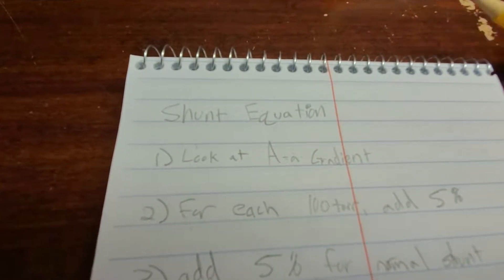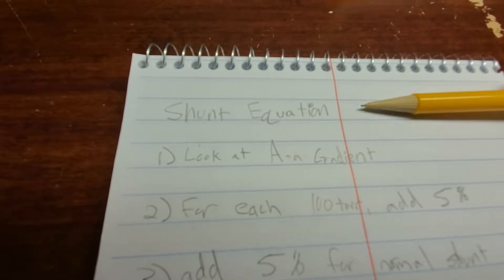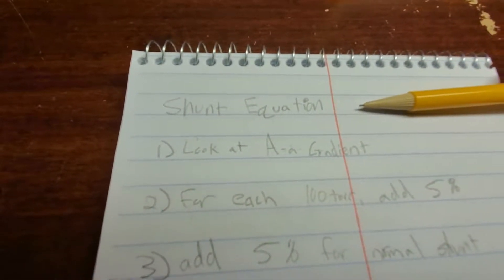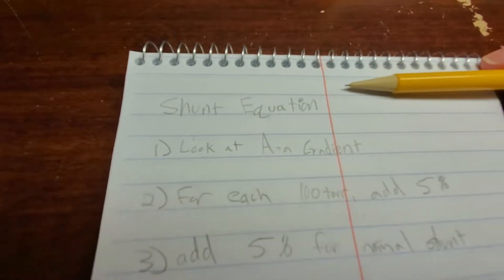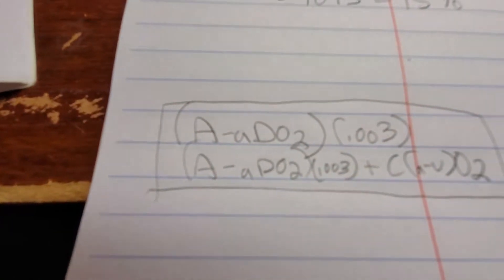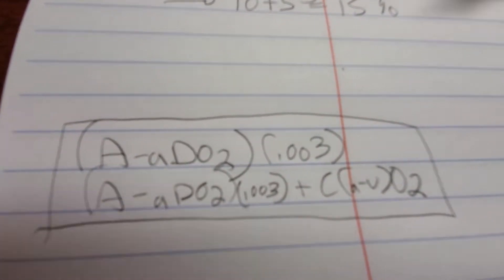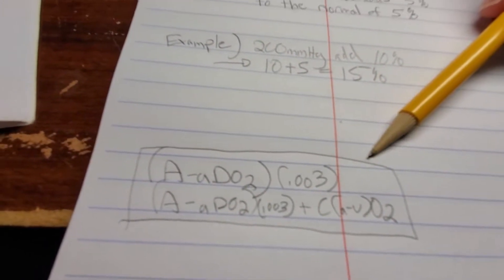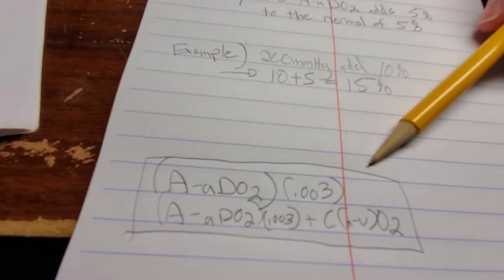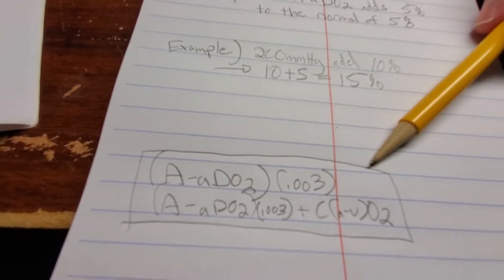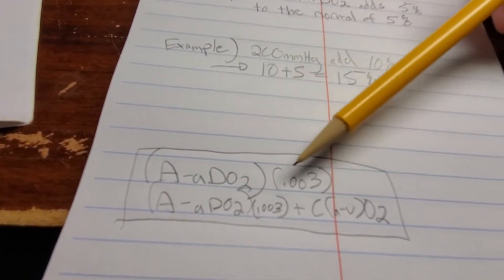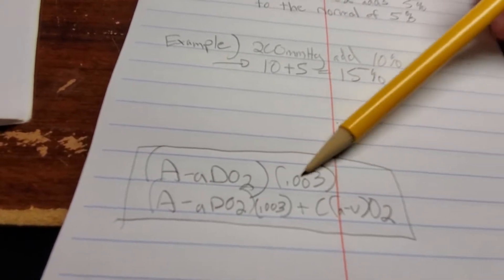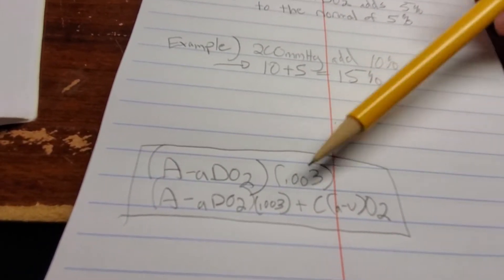This is the shunt equation. The shunt equation sucks, especially because you have all these, I wrote it down here. It's A minus aDO2. I don't even remember. I think that's what it is. But that sucks. Why should you have to do that and spend all your time with all these crazy things in here? You don't need any of that.